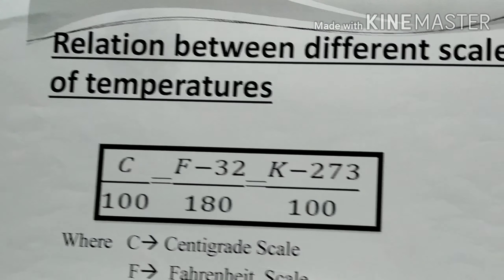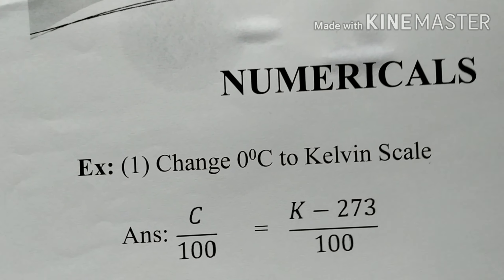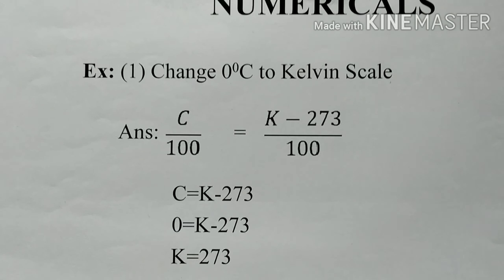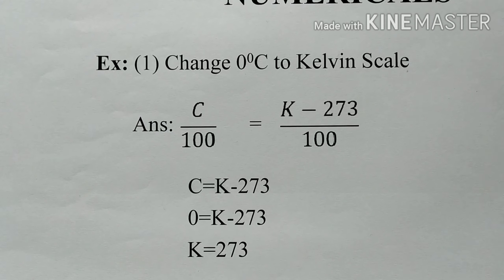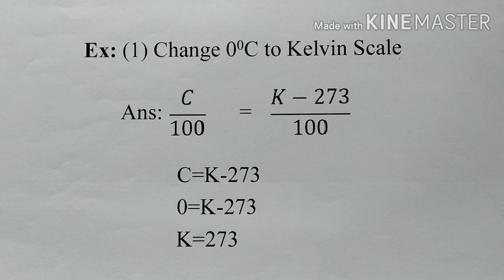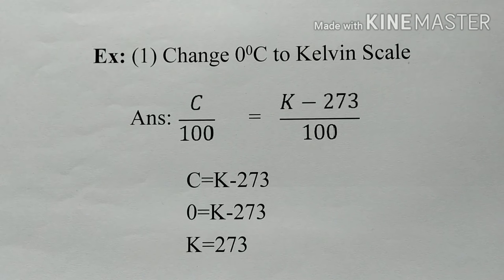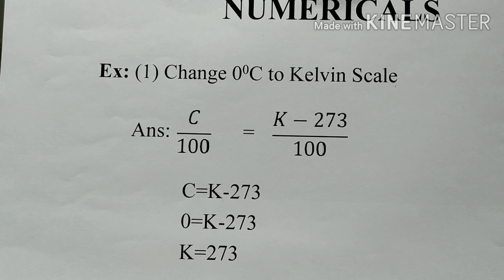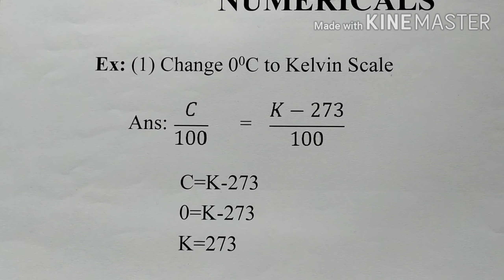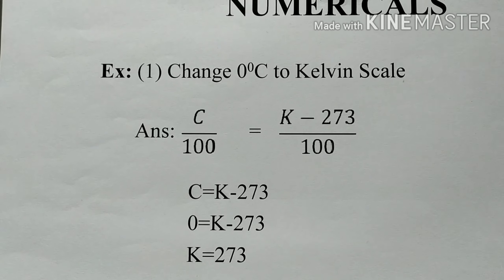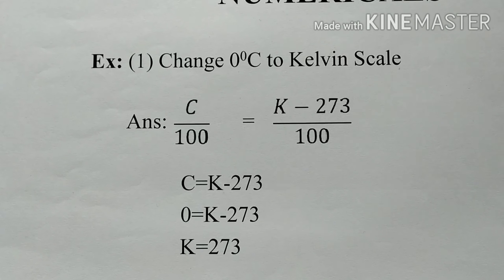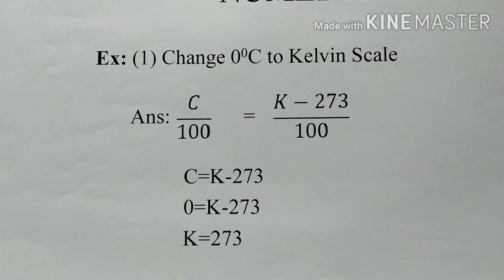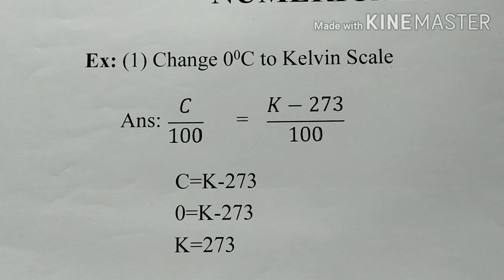First numerical: change 0 degrees centigrade to Kelvin scale. Using C/100 = (K − 273)/100, we cancel 100 on both sides to get C = K − 273. Substituting C = 0, we get 0 = K − 273, so K = 273. This is how you convert 0 degrees centigrade to Kelvin scale.